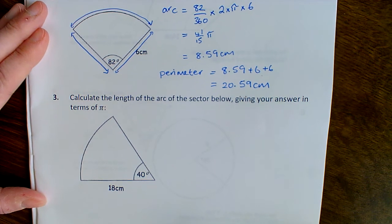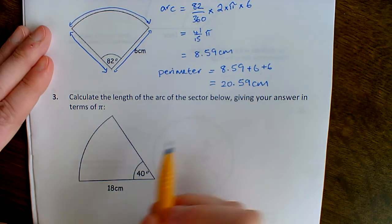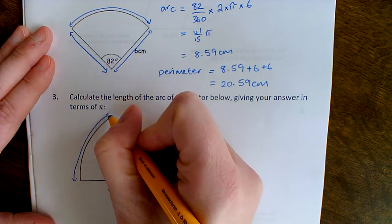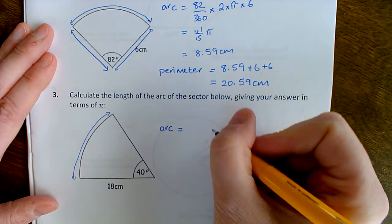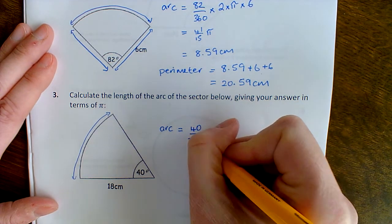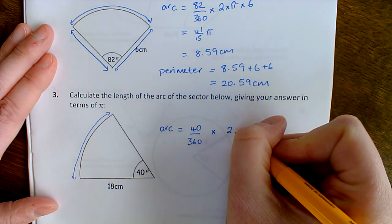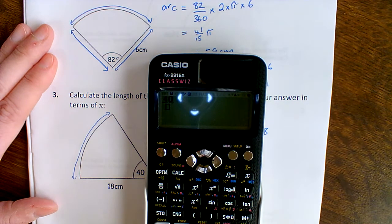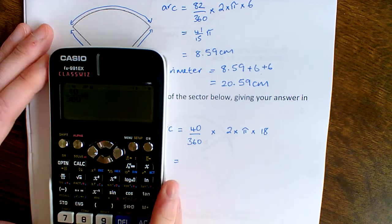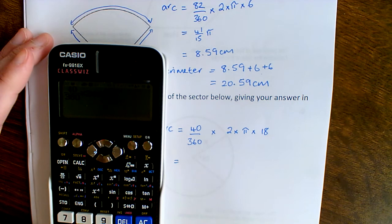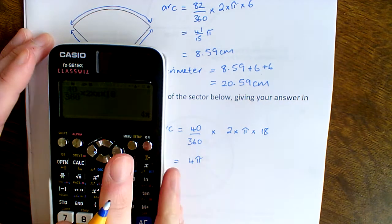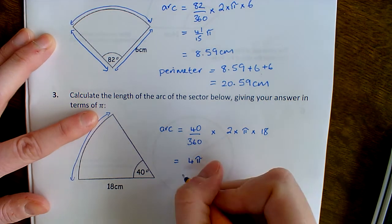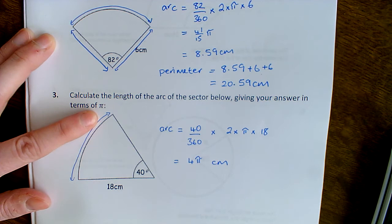The next one: calculate the length of the arc of the sector, giving your answer in terms of π. This time it's just the arc length. It's length so it's circumference — our fraction is 40 over 360 and the circumference is 2πr, so 2 times π times 18. The calculator gives us 4π. Since it wants the answer in terms of π, we leave it as 4π centimetres.